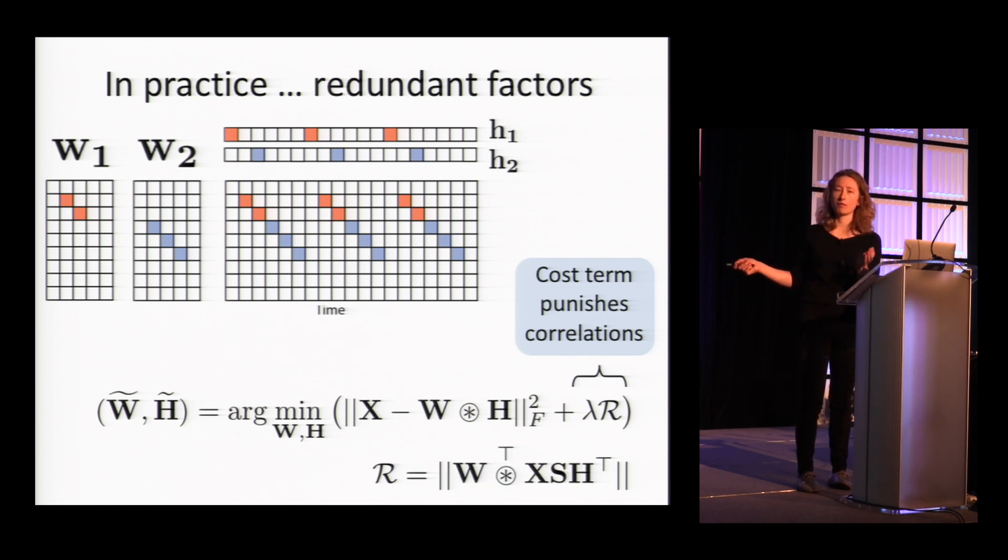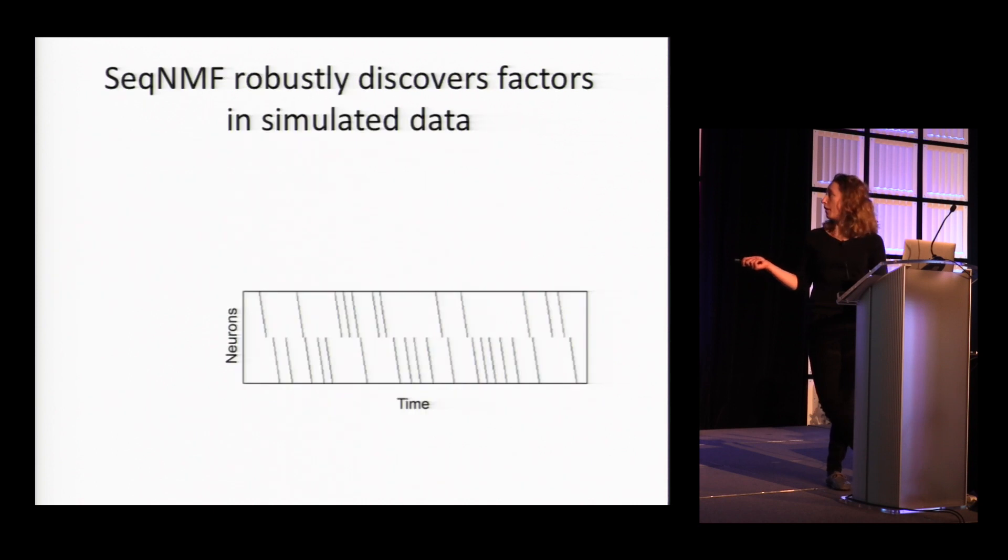But we added an extra term which is the overlap of each pattern with the data. So now instead of HH transpose, it's the overlap times H transpose. And this is sensitive to the type of correlations that we saw in these redundant factorizations. So this worked really well.